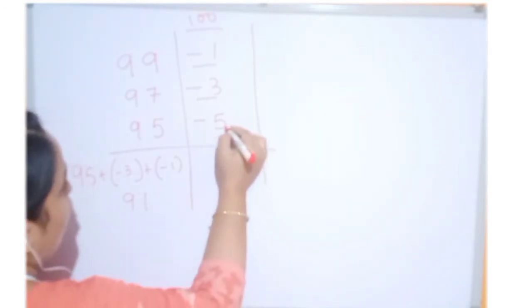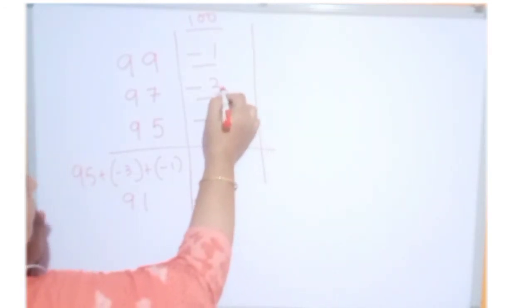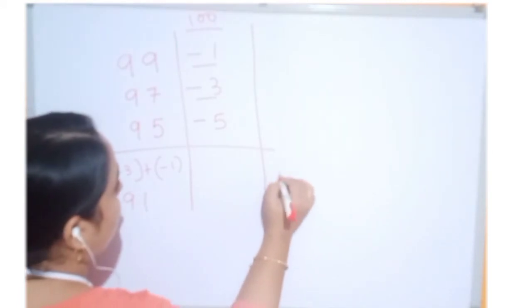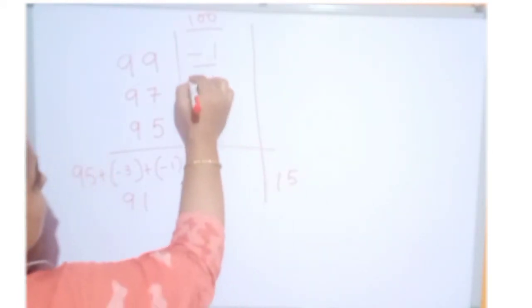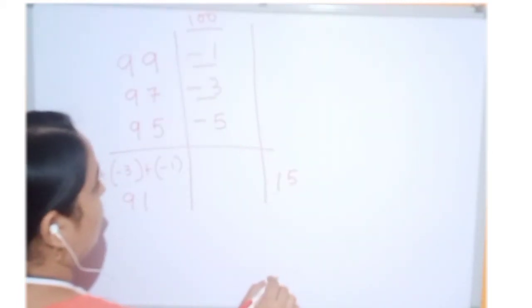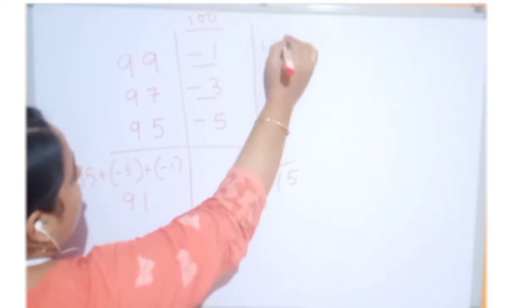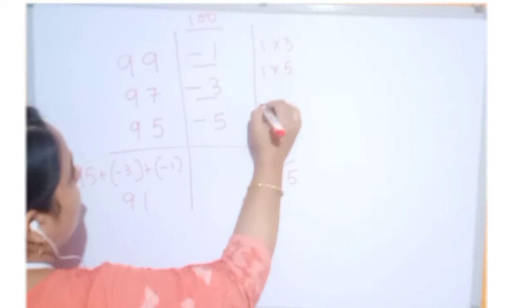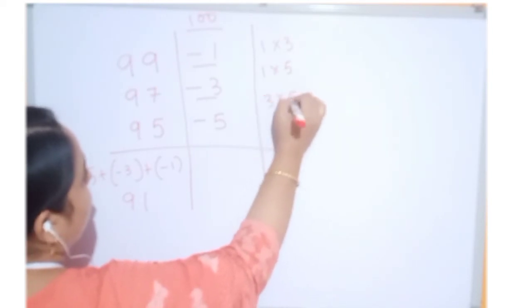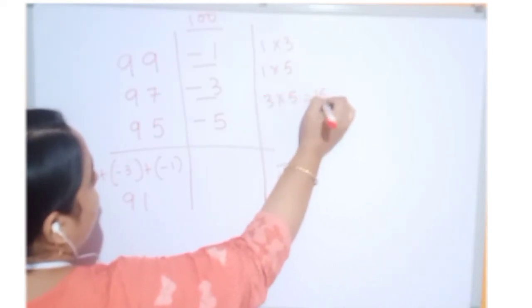Now, 5 3s are 15. 15 ones are 15. It will be in positive only because minus minus minus always gets plus. Okay. Now, 1 into 3. 1 into 5 and 3 into 5.